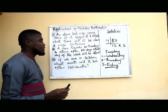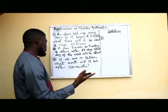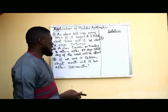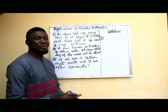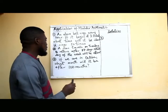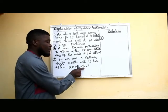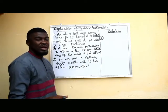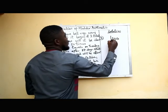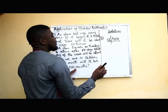Now let's look at the third question. If we are in October, what month of the year will it be after 100 months? Somebody who does not know modular arithmetic would start counting 100 months — that would be a whole lot of work and you'd likely make mistakes. Using modular arithmetic, all we need to do is divide the 100 months by the number of months in a year, which is 12. So this is mod 12, and 100 divided by 12 gives us 8.